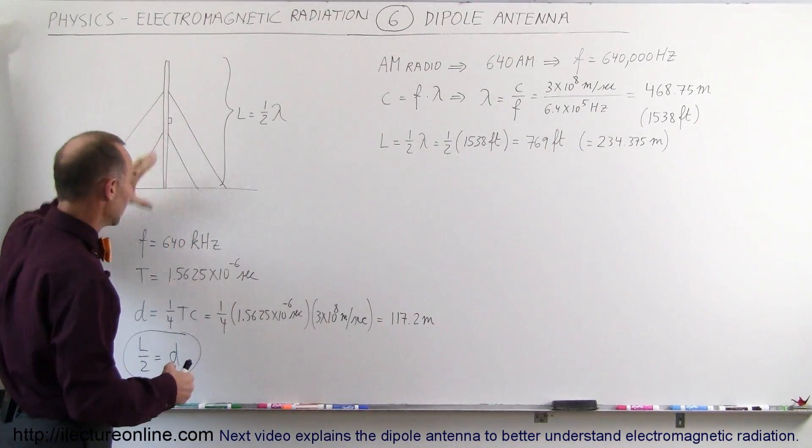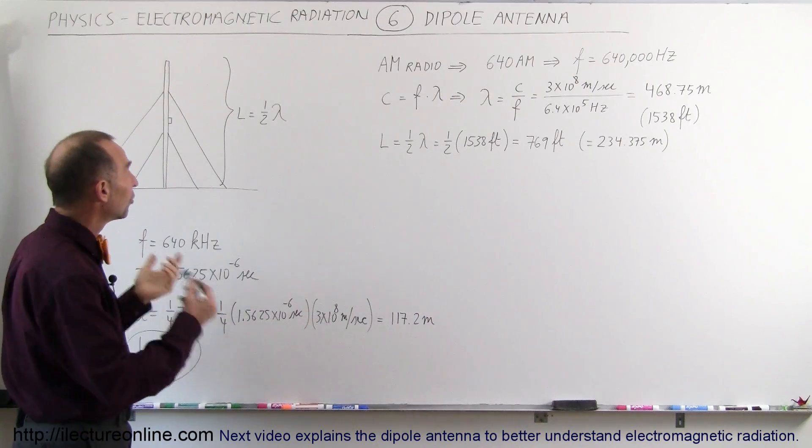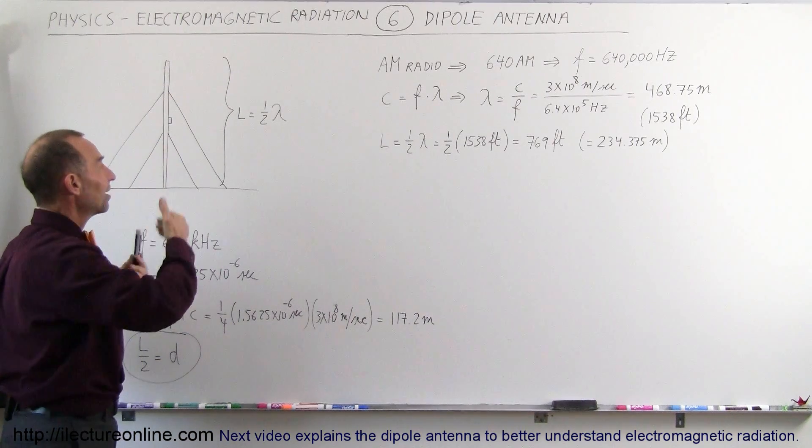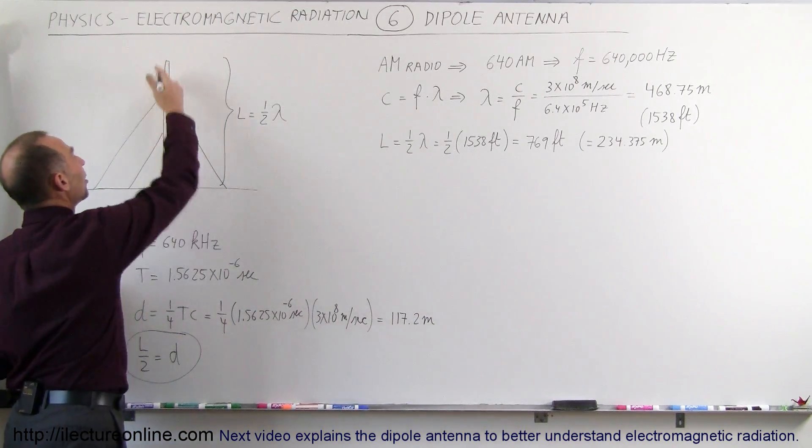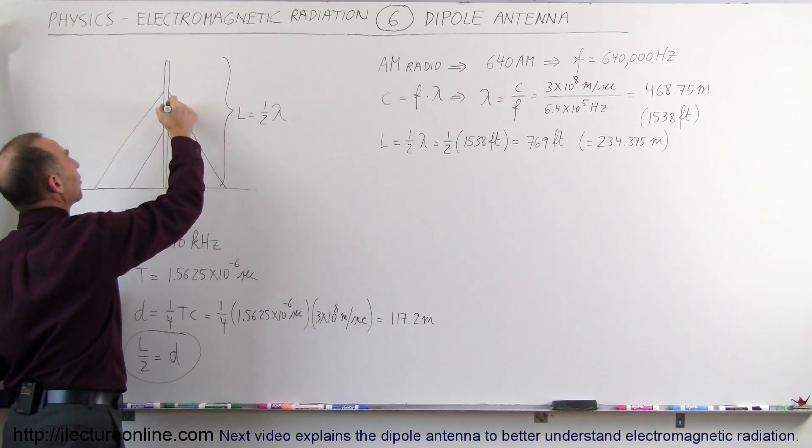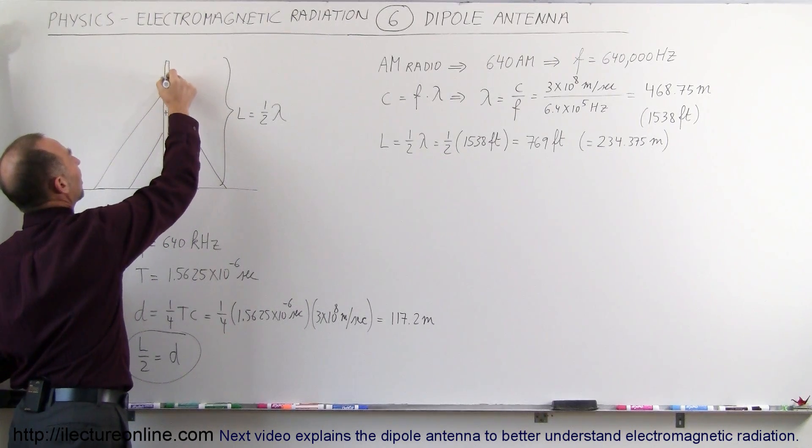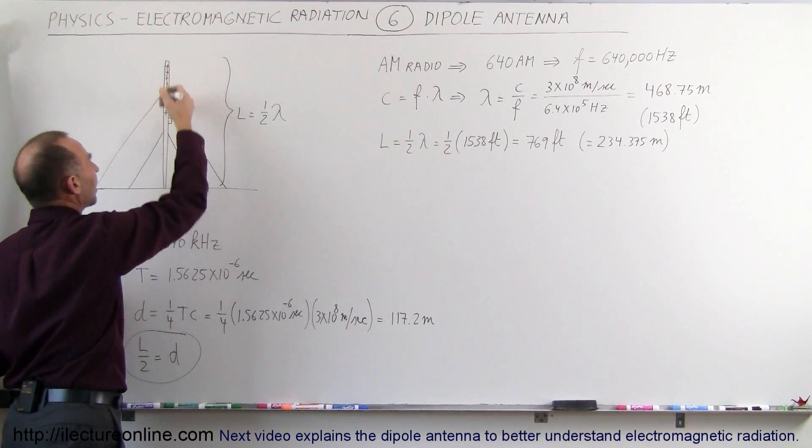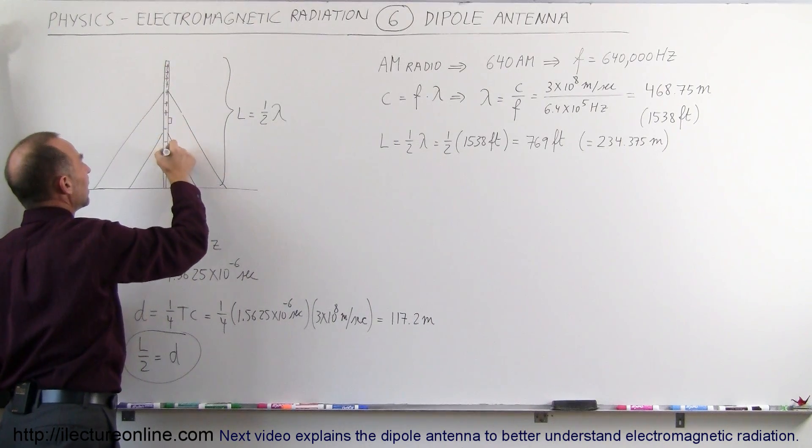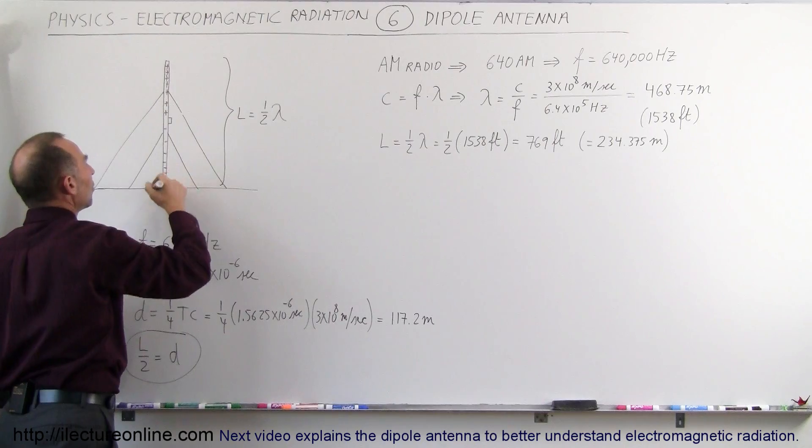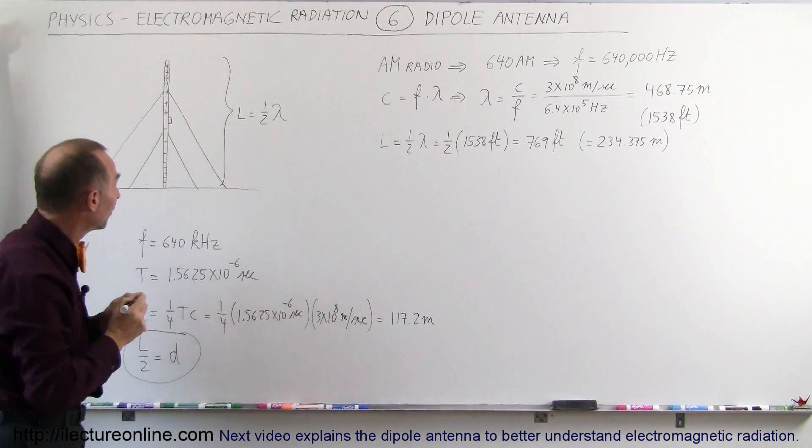The reason for that is because at the same time that we send a positive charge in this direction, so that the positive, that the top side of the tower ends up being positively charged, and then the bottom half of the tower ends up being negatively charged.